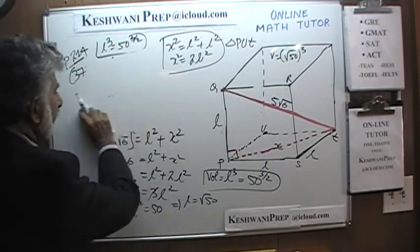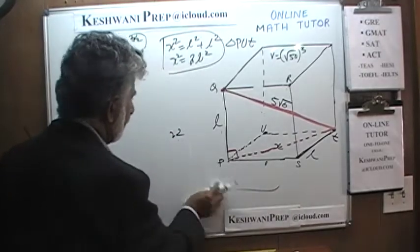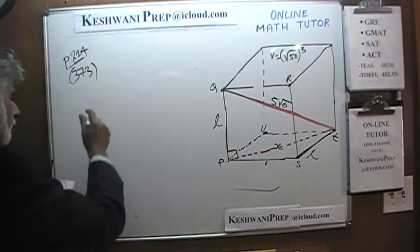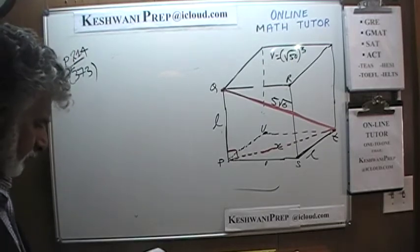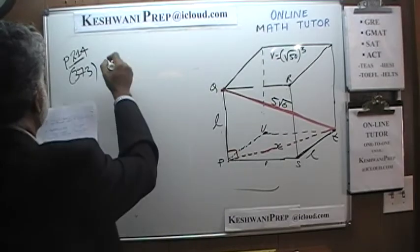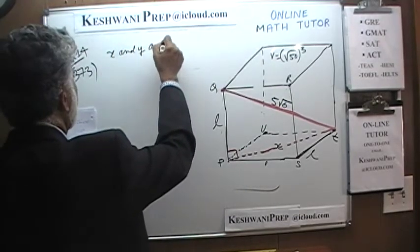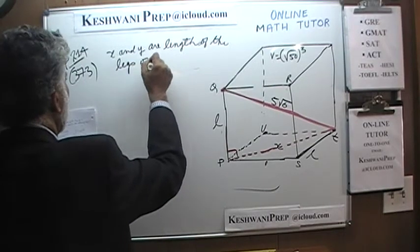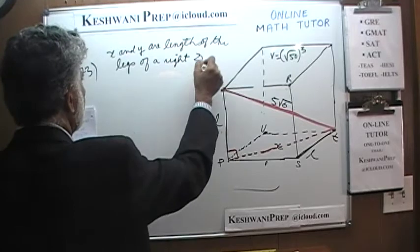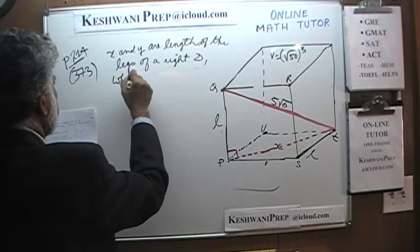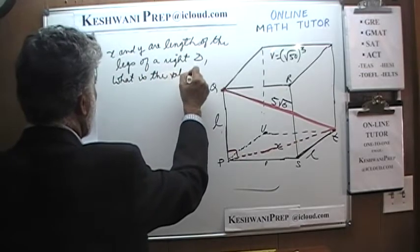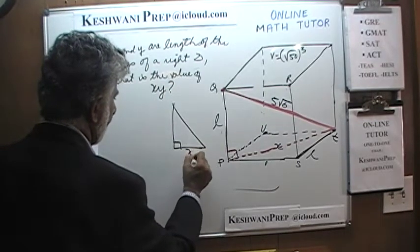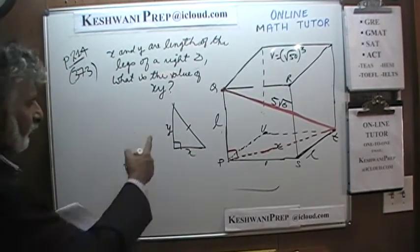Number 373. X and Y are lengths of the legs of a right triangle. The question is: what is the value of x times y? We want to find their product. We have a right triangle here with legs x and y.